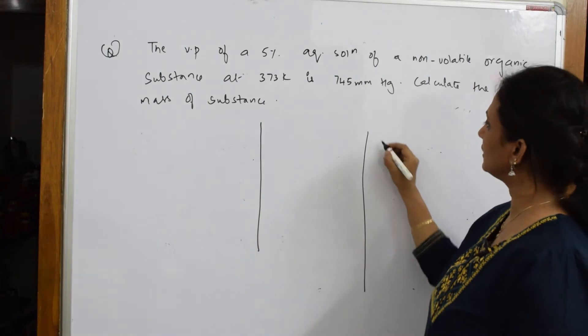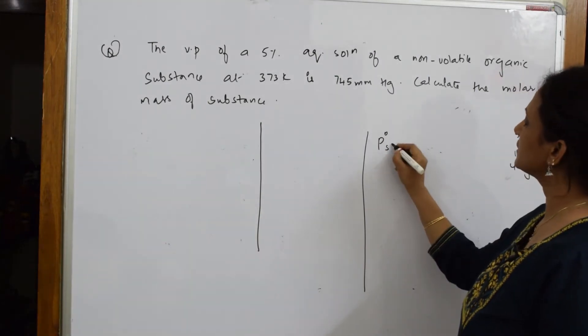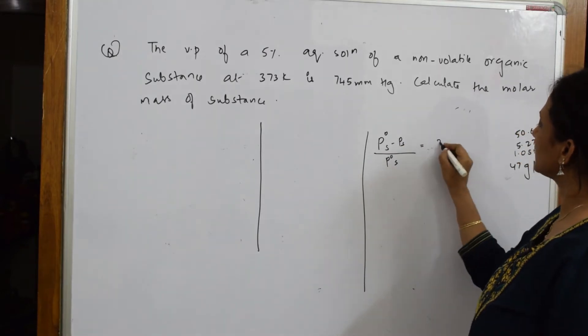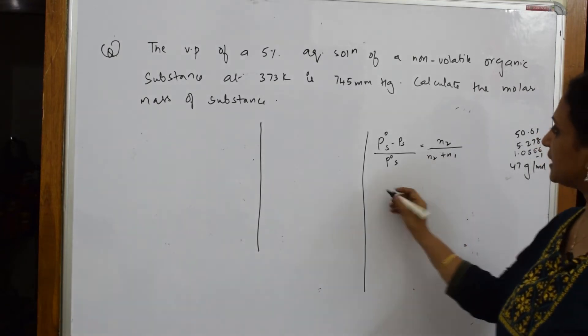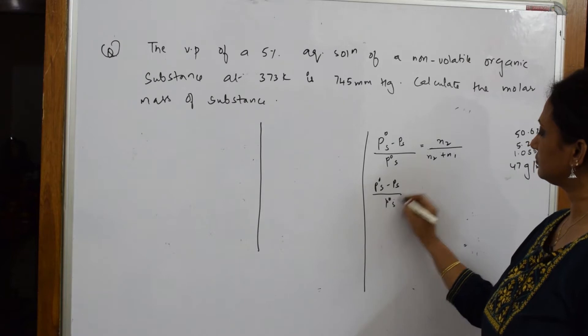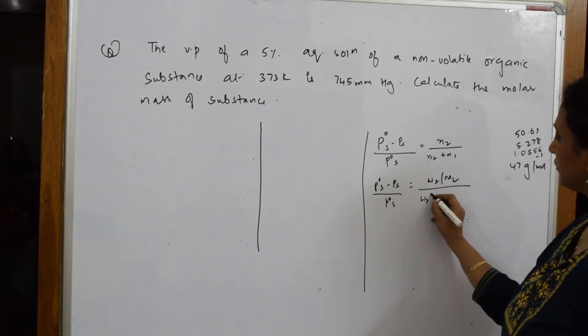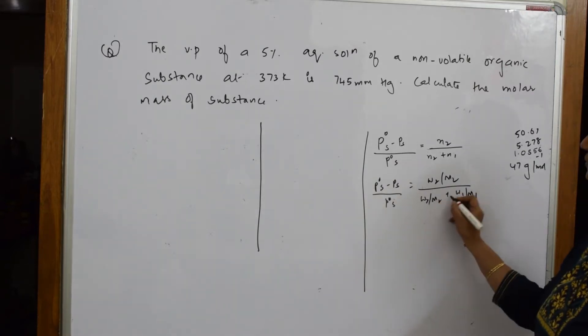What else is given? The vapor pressure is also given. That means I have to relate or write a formula or use the formula. The final answer I can get is p0s minus ps by p0s which is equal to n2 by n2 plus n1. The important thing is different variations in the numerical.